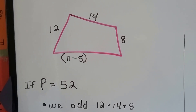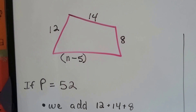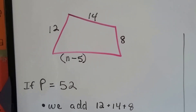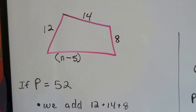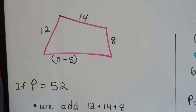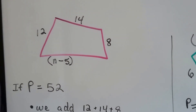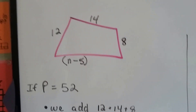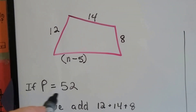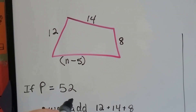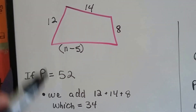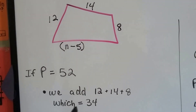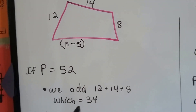Take a look at this one. We've got all the measures except one side — all we've got is n minus 5. If it tells us that the entire perimeter is 52, if p is equal to 52, then what we do is we add the 12, the 14, and the 8, and we get 34.